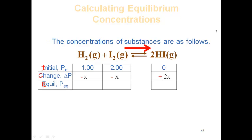I have to add my initial and change to get my equilibrium, which are going to be 1 minus X for H2, 2 minus X for I2, and 2X for HI.